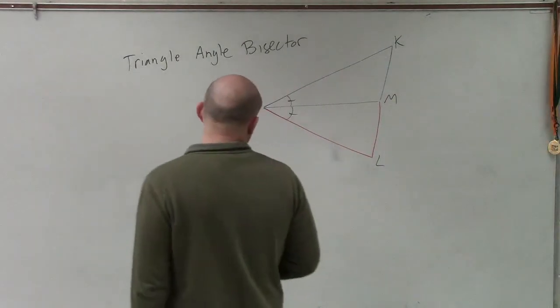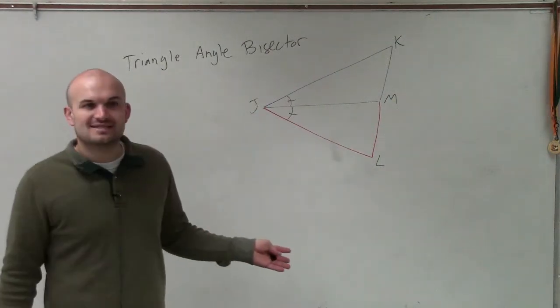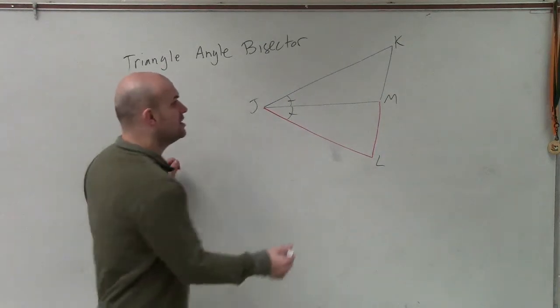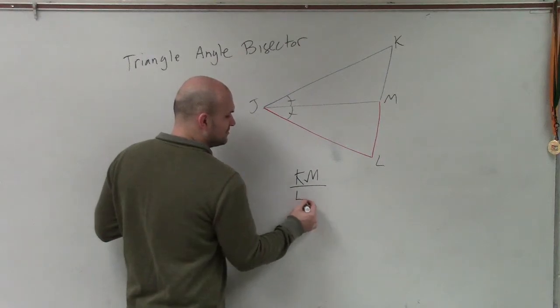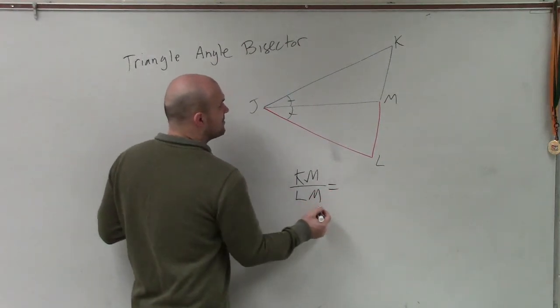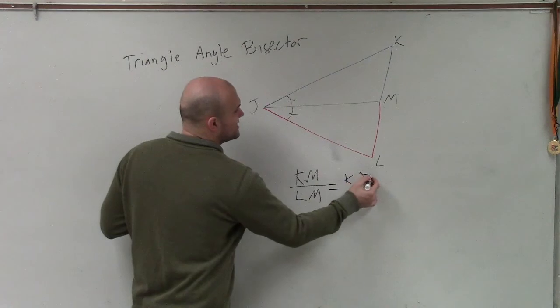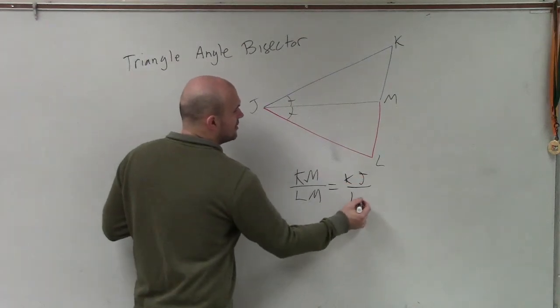So I can actually, and I wrote this up in kind of blue and red so you guys can see how they're proportional to each other. So what I can write is KM is to LM is proportional to KJ to LJ.